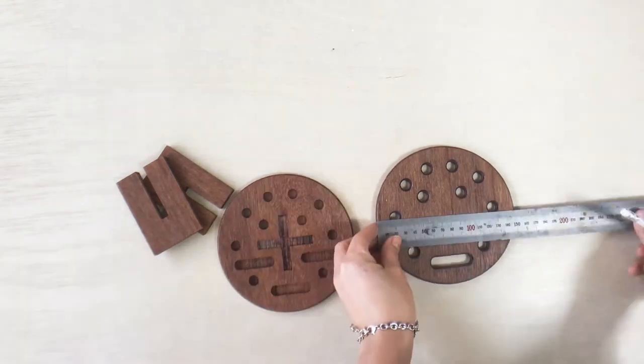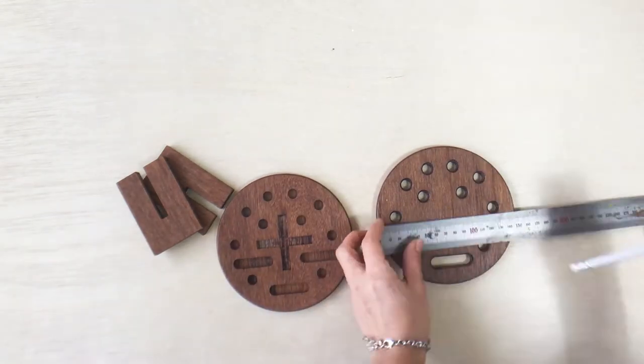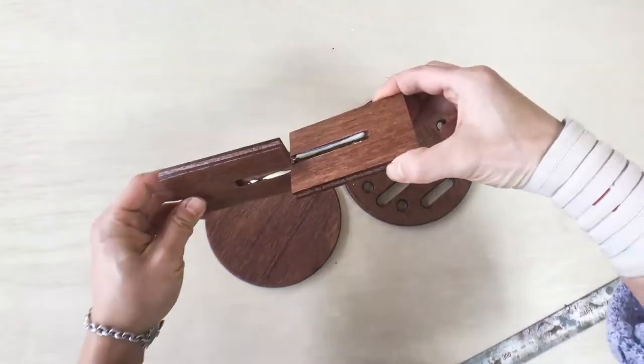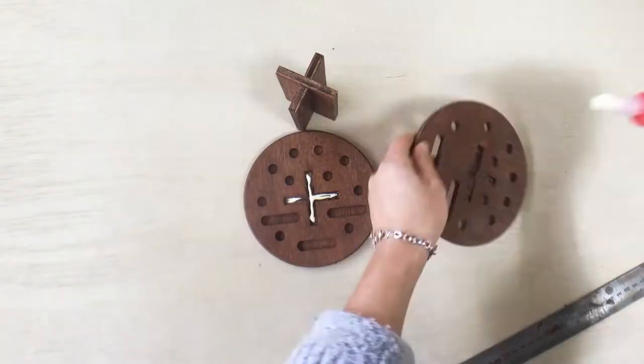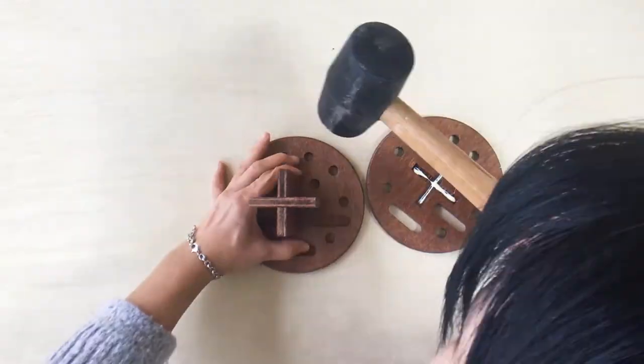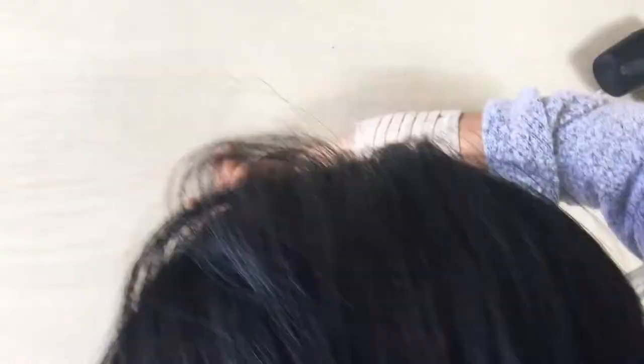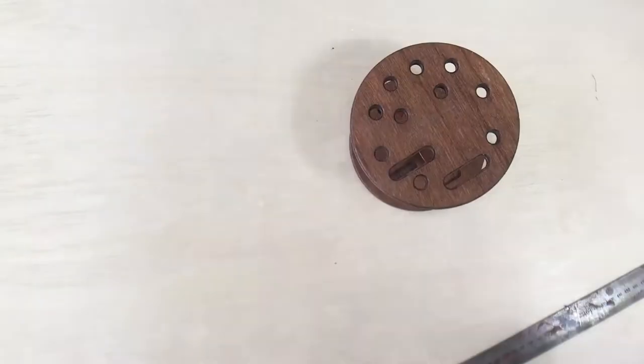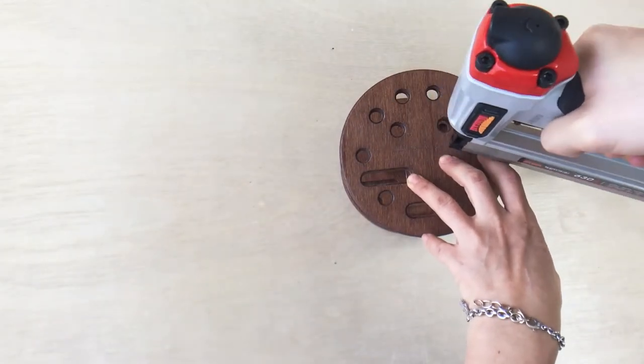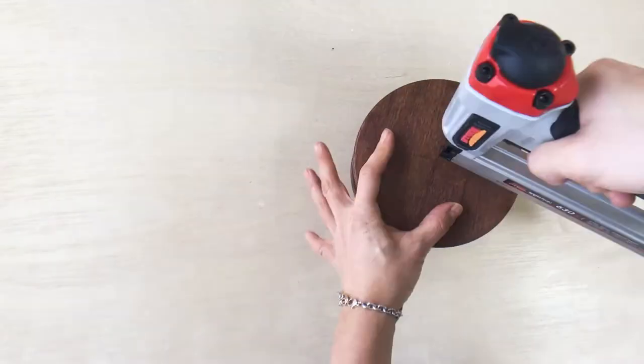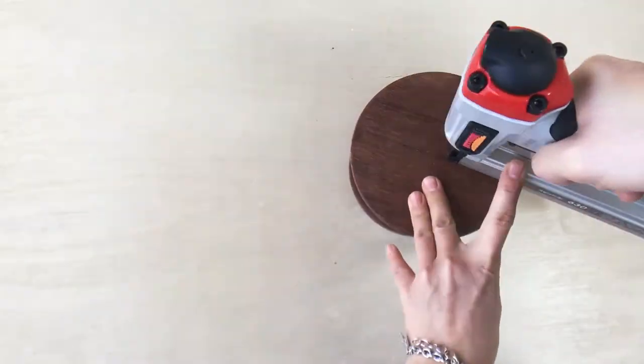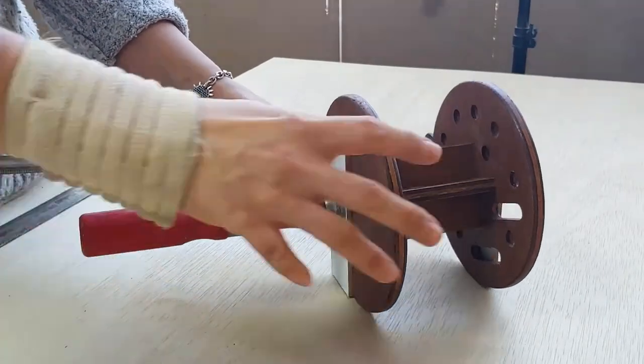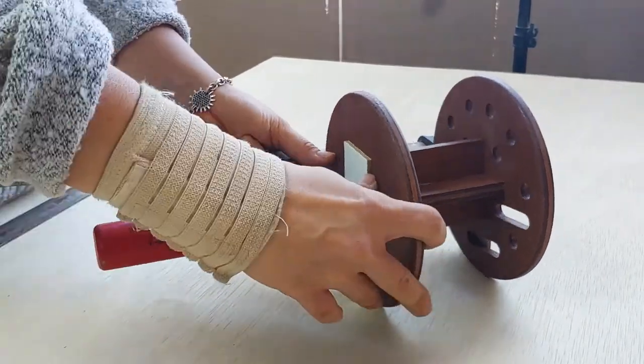It's time to assemble. I marked where the finish nailer will go. Apply bond, assemble, and fix with the finish nailer. I clamped it while the bond was drying to fix it tightly.